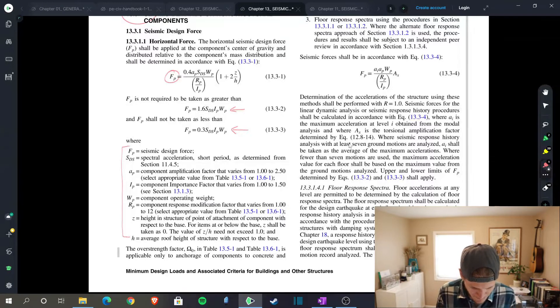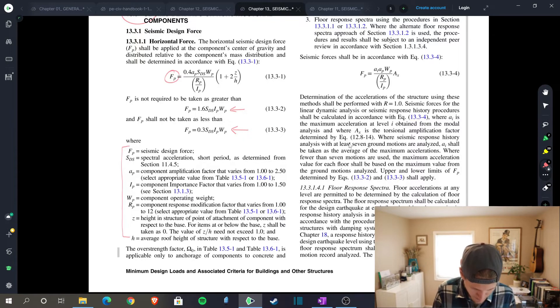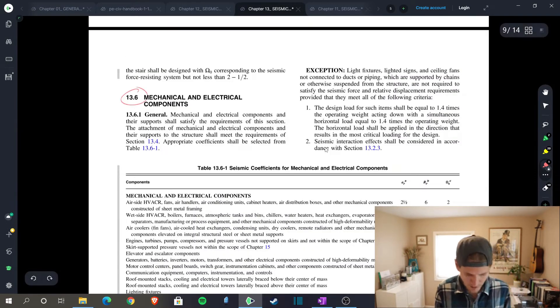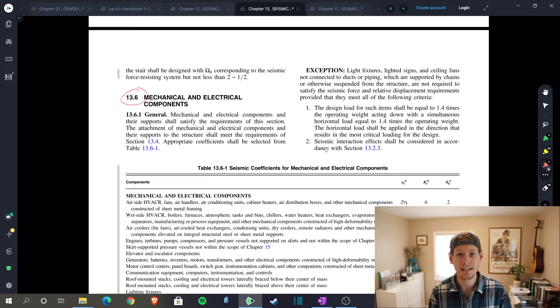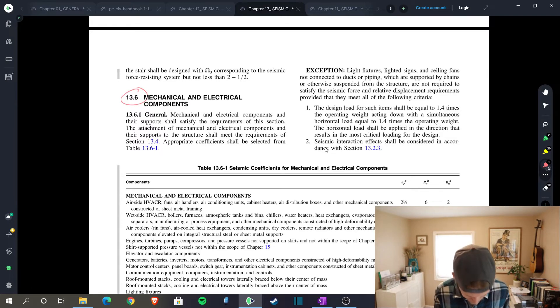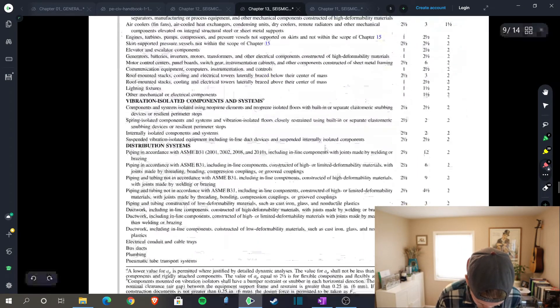Well, first let's find Ap, Rp, and Omega. 13.6 is mechanical and electrical components. We are an HVAC unit, so that is mechanical. The 7-16 provides you this table which defines A, R, and Omega based on your component type. And you'll see it's a big list, scrolls down here.